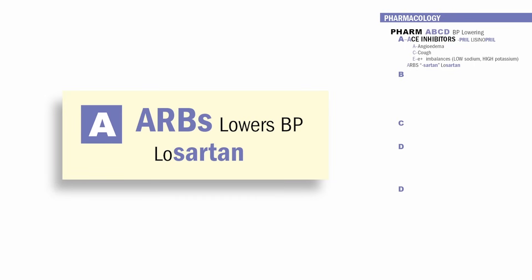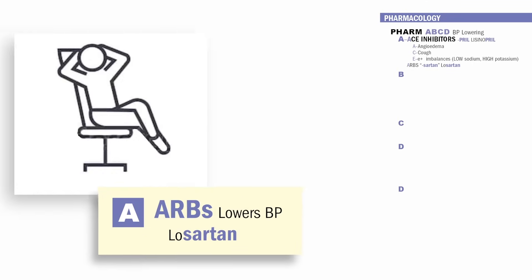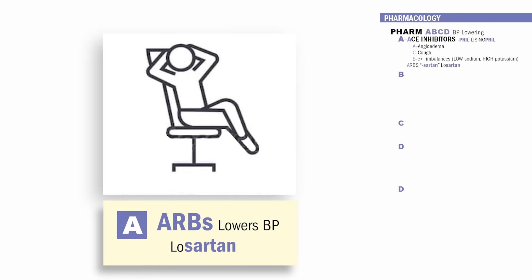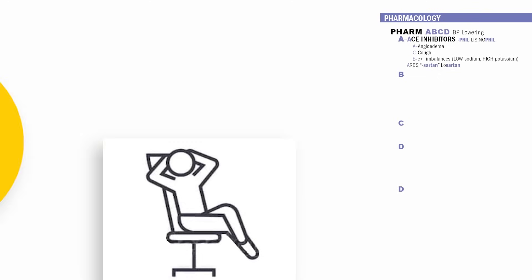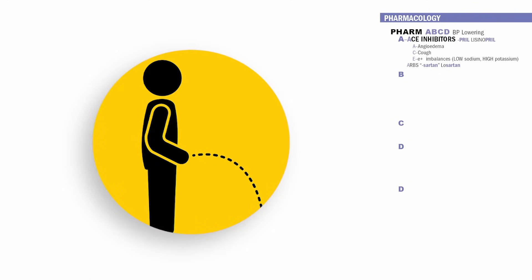Our second A is for ARBs, which also lower blood pressure. These end in -sartan like losartan. Think sartan sounds like relaxed man or sartan retirement plan. We have less workload on the heart and more relaxation to the blood pressure. They let fluid out of the body and into the potty, so that decreases the blood pressure.